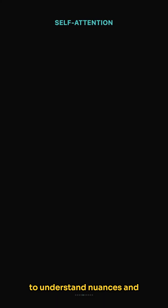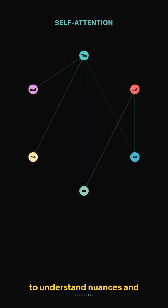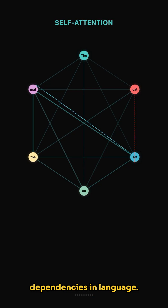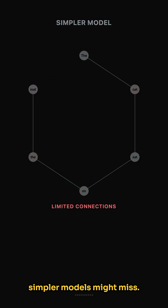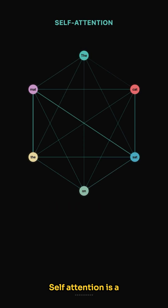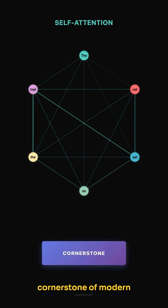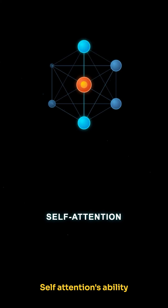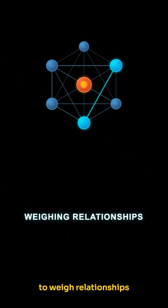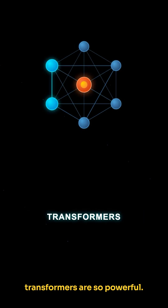This process allows the model to understand nuances and dependencies in language, capturing relationships that simpler models might miss. Self-attention is a cornerstone of modern natural language processing, and its ability to weigh relationships is why models like transformers are so powerful.